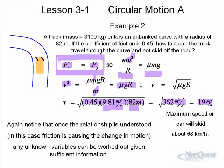In this case we solved for maximum speed, but we could equally solve for the smallest radius the car can navigate without skidding — which matches everyday experience that tighter curves are harder to take at speed. Once you understand that centripetal force is caused by friction and know the formulas for both, you can set them equal and solve for any unknown by manipulating the relationships.